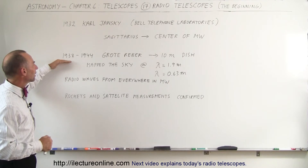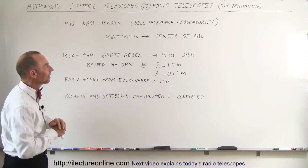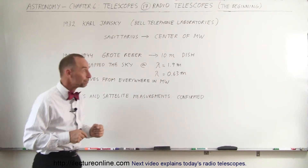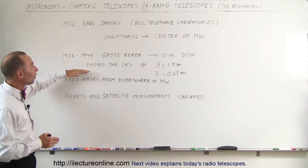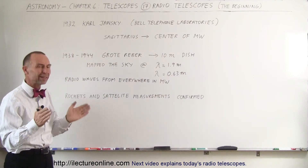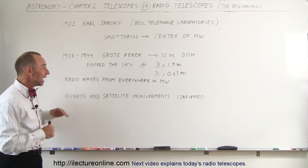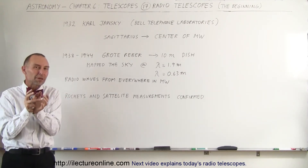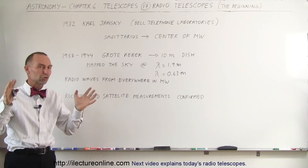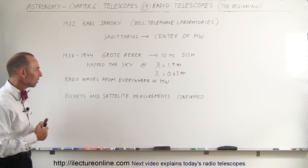Then, somewhat later, between 1938 and 1944, we had someone named Grote Reber build a 10-meter dish, almost 33 feet across, in his own backyard. He used that dish over a period of about six years to map the entire sky at two wavelengths — one at 1.9 meters and the other at 0.63 meters, so those are relatively short radio waves. He realized that radio waves were not just coming from the center of the Milky Way, but from everywhere within it. They may have been strongest towards the center, but he saw a signature from all over the place, throughout our entire Milky Way galaxy.